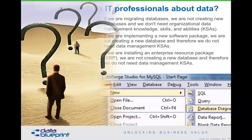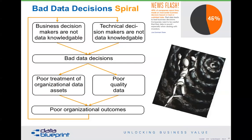What this has left us with is a situation where organizations have little idea what data they have, they don't know where it is, and they don't know what their knowledge workers are doing with it. This leads to what I call the bad data decision spiral: business and technical decision makers are not data-knowledgeable, therefore they make bad data decisions, which results in data assets being treated poorly and being of poor quality, leading to poor organizational outcomes. If we don't change this cycle, how can we expect things to work differently? It's a huge problem and we need to do better.